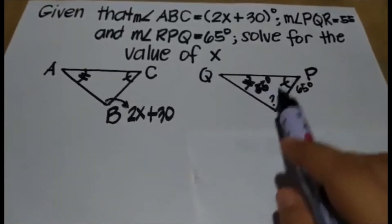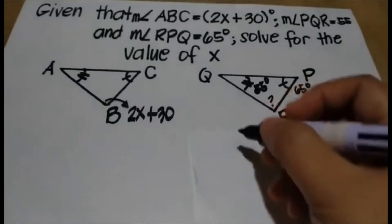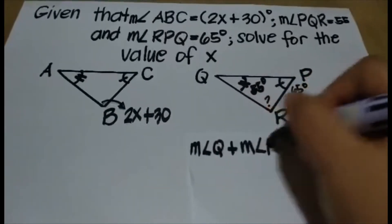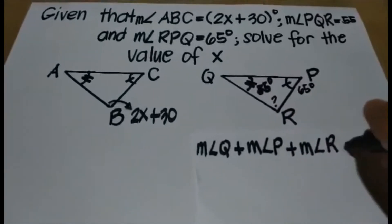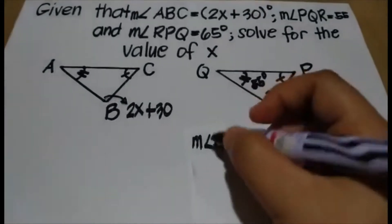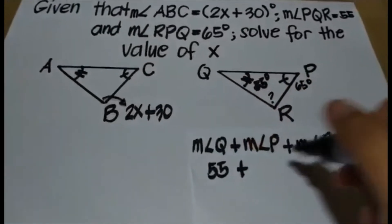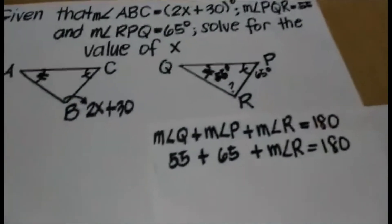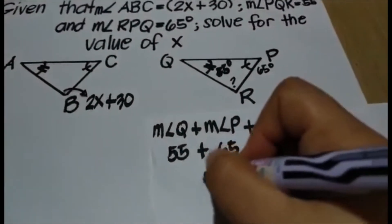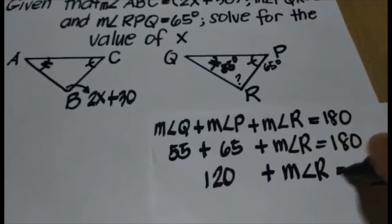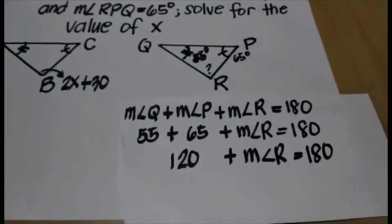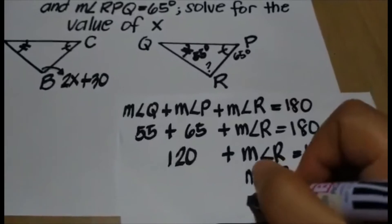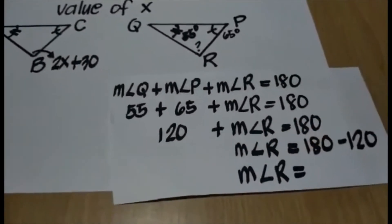So we will solve first for the measure of angle R. Remember, the sum of the interior angles of a triangle is equal to 180 degrees. So we can say measure angle Q plus measure angle P plus measure angle R equals 180 degrees. Substituting: 55 plus 65 plus measure angle R equals 180 degrees. 55 plus 65 is 120, so 120 plus measure angle R equals 180. Using the subtraction property of equality, measure angle R equals 180 minus 120.